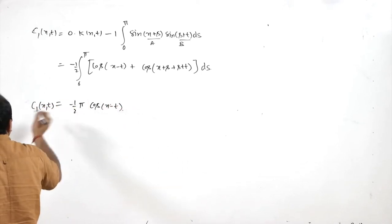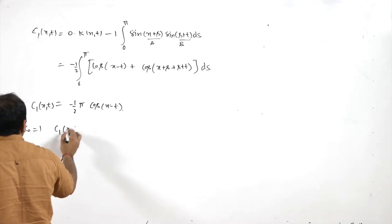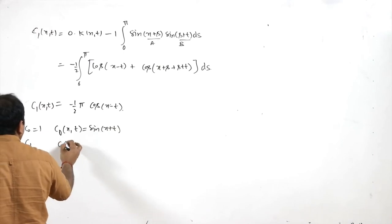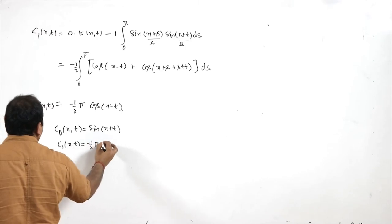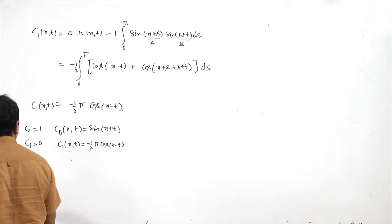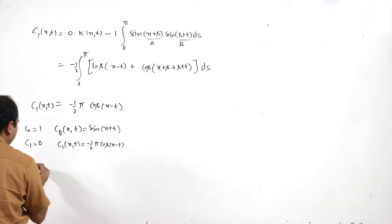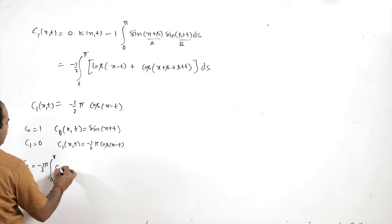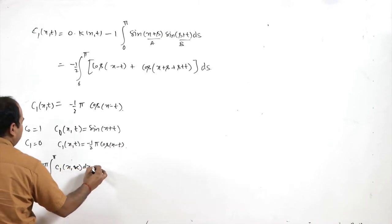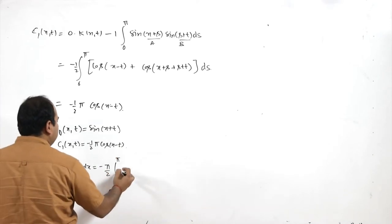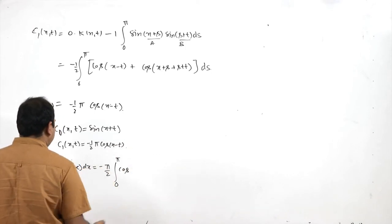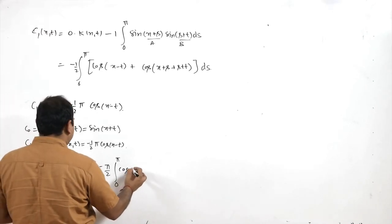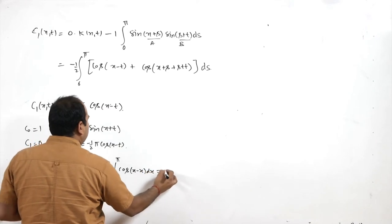So we have c₀ = 1, C₀(x,t) = sin(x+t), and C₁(x,t) = −(π/2)cos(x−t). With small c₁ = 0, we now find small c₂ = ∫₀^π C₁(x,x)dx = −(π/2)∫₀^π cos(0)dx = −π²/2.